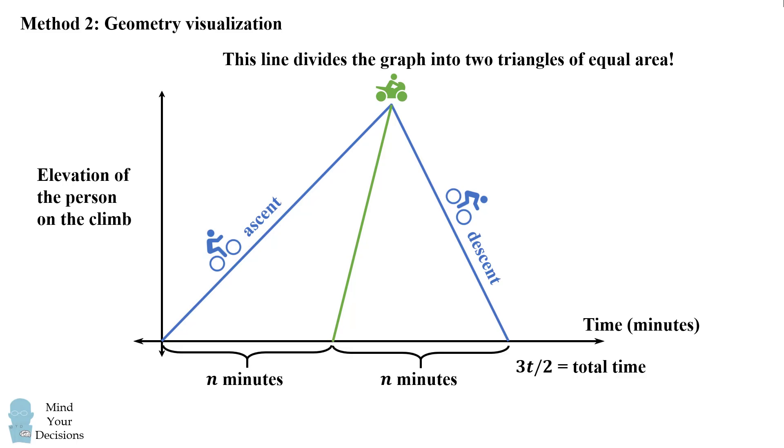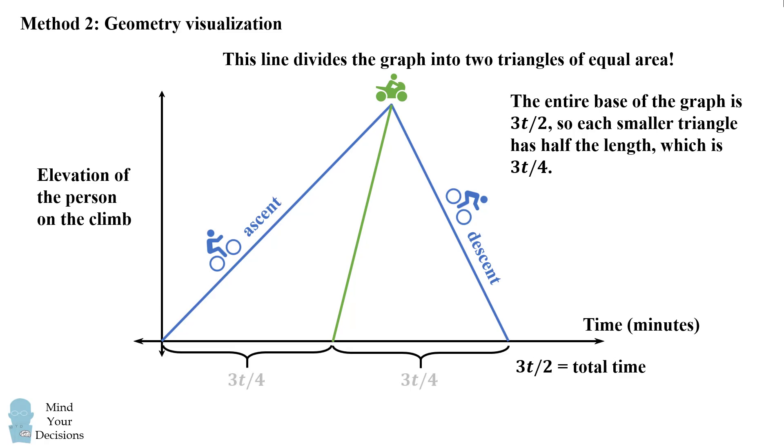So this line divides the graph into two triangles of equal area because both triangles have the same base of n and the same height as the elevation of the climb. Consequently, since the entire base is 3 halves t, each base of these smaller triangles will be half that length, which is 3 fourths t. So each of these lengths will be 3t over 4.